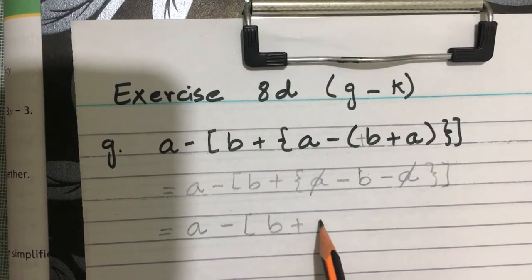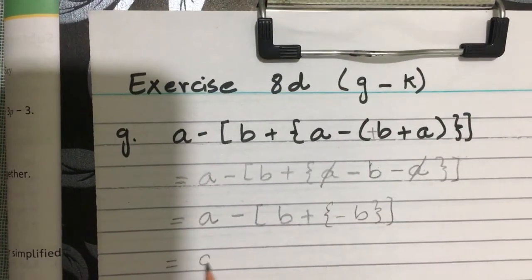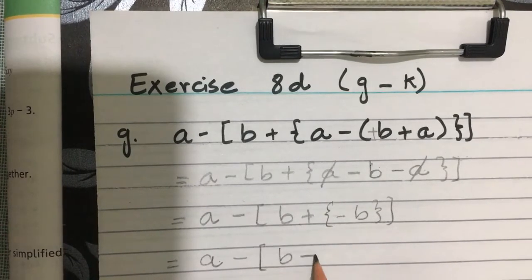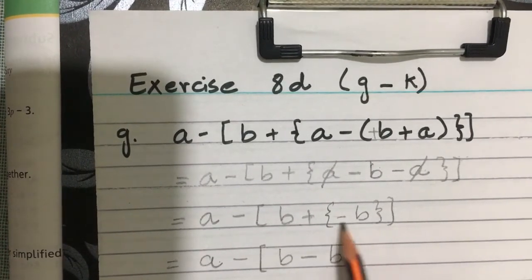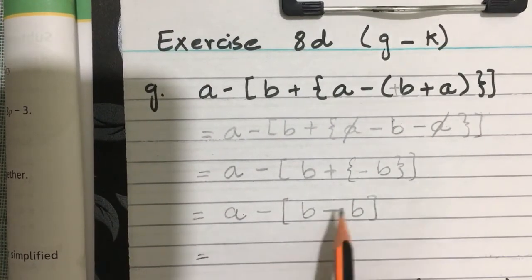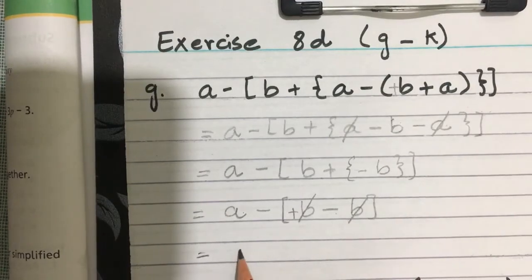Then a minus b plus minus b. This curly bracket will finish, square bracket will come. Then this is plus minus, plus minus equals zero. Answer is a.